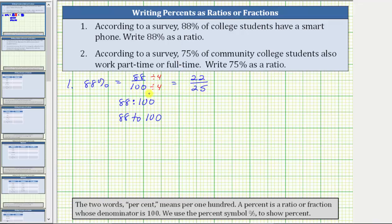Now that we've simplified the fraction or ratio, we can say 22 25ths of the college students have a smartphone, or 22 out of 25 college students have a smartphone. And again, as a ratio, we can use a colon, as well as the word two.